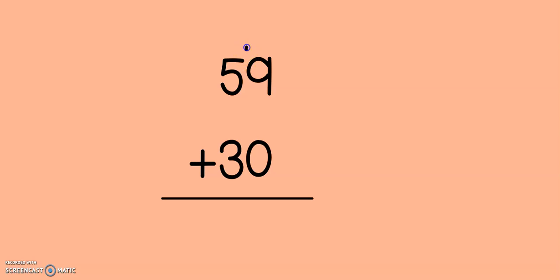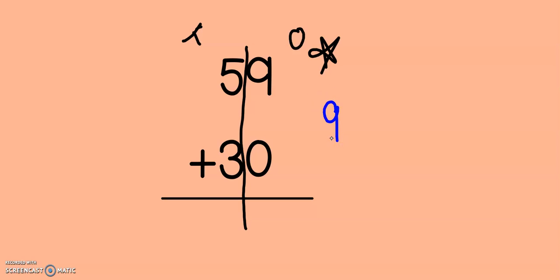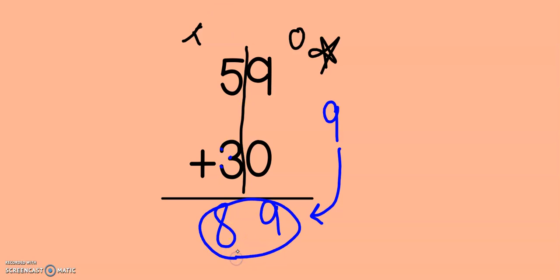Let's take a look at the next problem: 59 plus 30. I can separate my tens and my ones. I always start with my ones. 9 plus 0 — if I have 9 and I get no more, I have 9. Does 9 have a 10 in it? No, it's very close, so I can just pull my 9 right down to the bottom. Now let's add our tens: 5, 6, 7, 8. Did I make a new hundred? No, I did not. Not yet. So my final answer is 89.